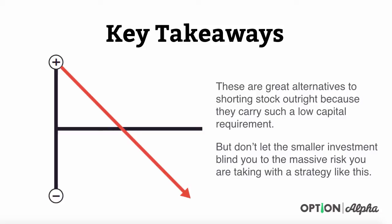Some of the key takeaways are that these are great alternatives to shorting stock outright because they carry such a low capital requirement. But don't let the smaller investment blind you to the massive risk you're still taking with this strategy. We're trying to replicate the profit and loss diagram of a short stock position — this doesn't mean we are taking less risk. It just means we're using less capital to get into the position, leveraging the power of options. Make sure you understand where you can and can't lose money as the stock trades in the future.